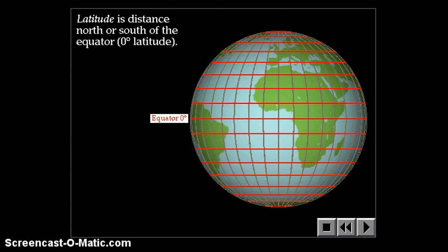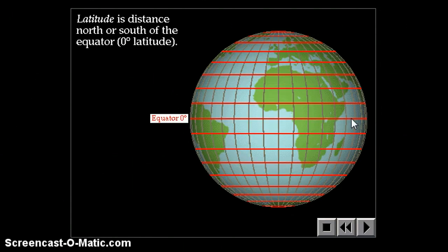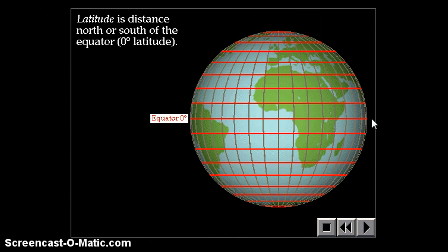Latitude is the distance north or south of the equator. The latitude lines are shown in red on this picture. Latitude lines run east or west, but they measure how far you are north or south. The equator is a latitude line, and all other latitude lines are parallel to the equator. Sometimes I remember latitude lines are like the rungs of a ladder — you'd step on these as you were climbing.